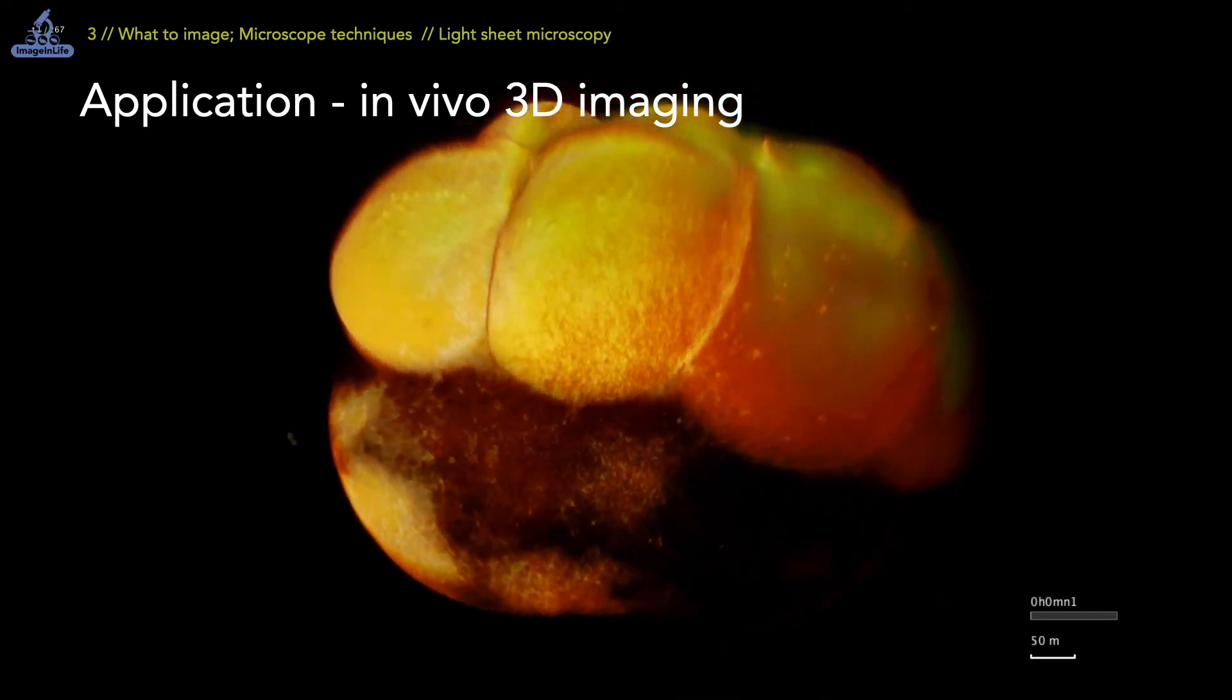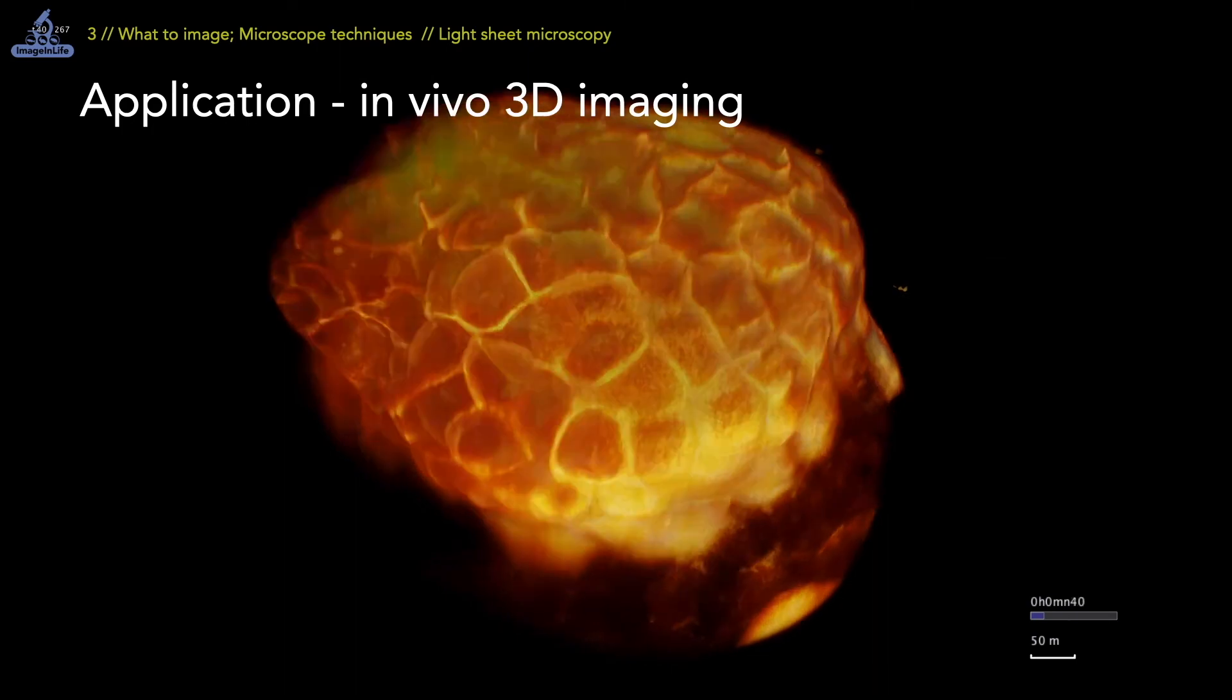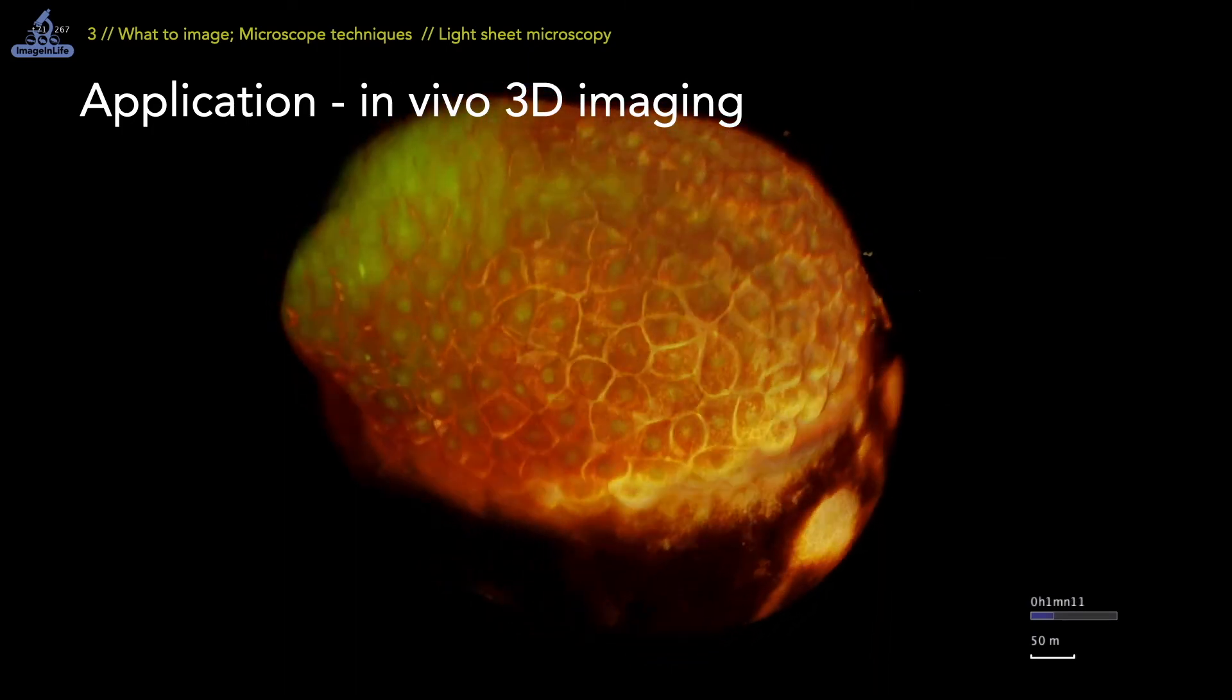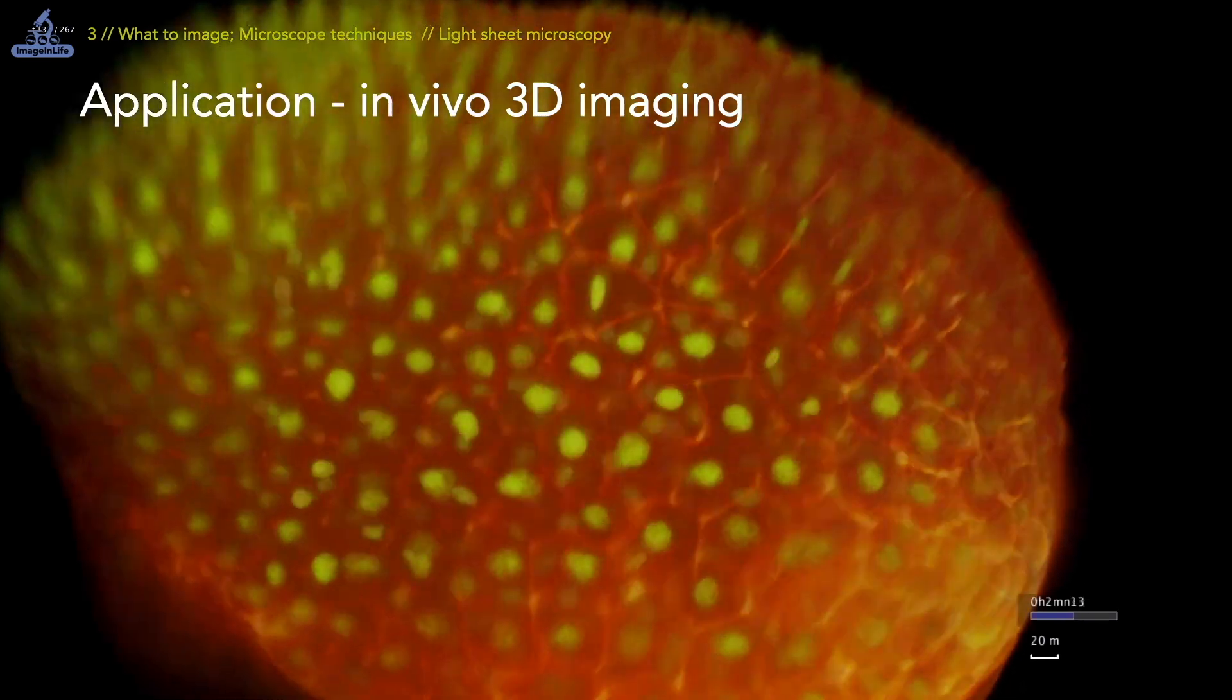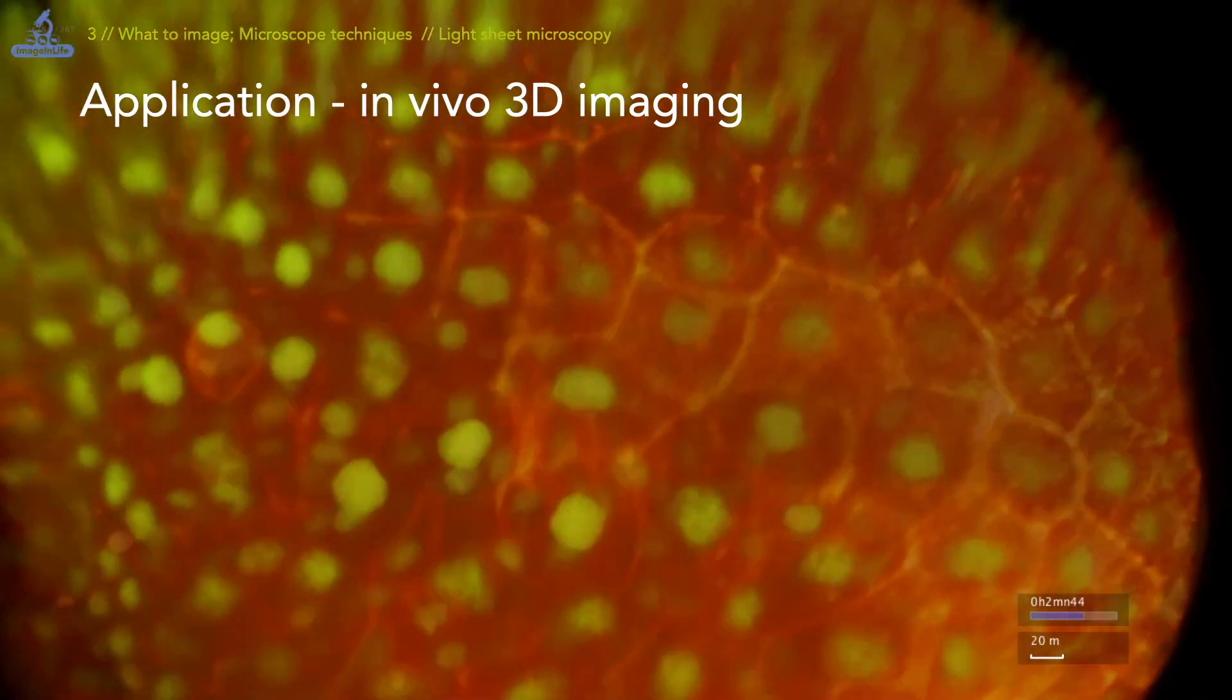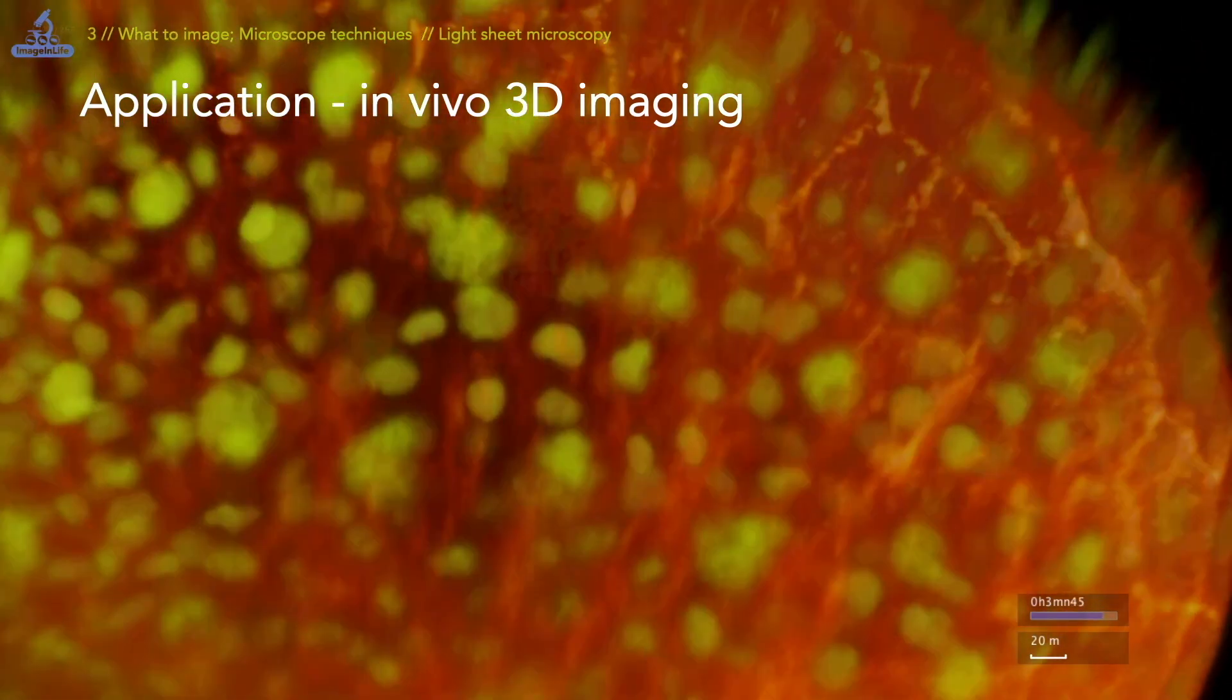This movie shows a zebrafish embryo imaged live by light sheet microscopy from an early embryonic stage of just a few cells until their number increases to several thousands. We observe cell movements and cell divisions. Each cell is stained with green nuclei and red membranes or reversed.